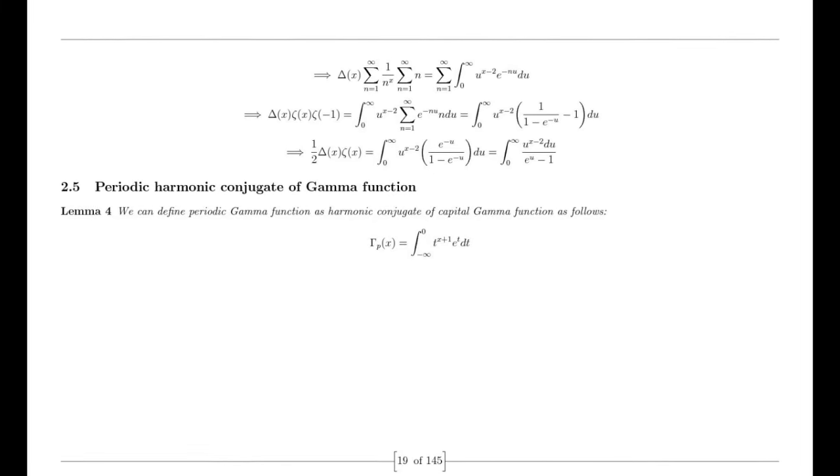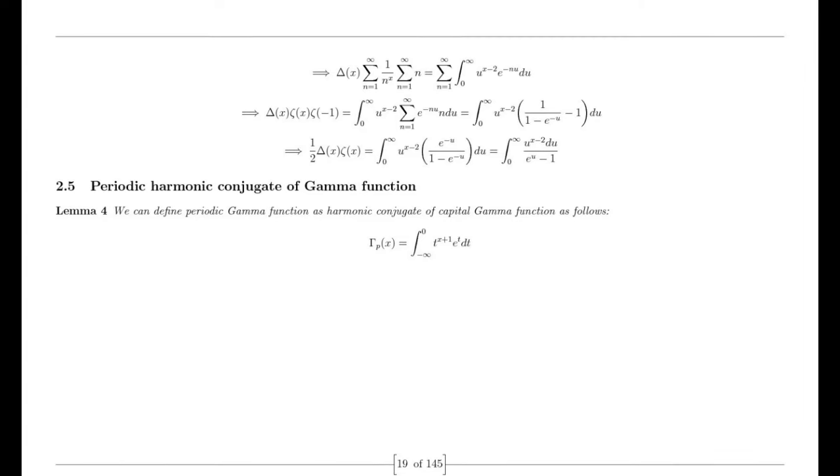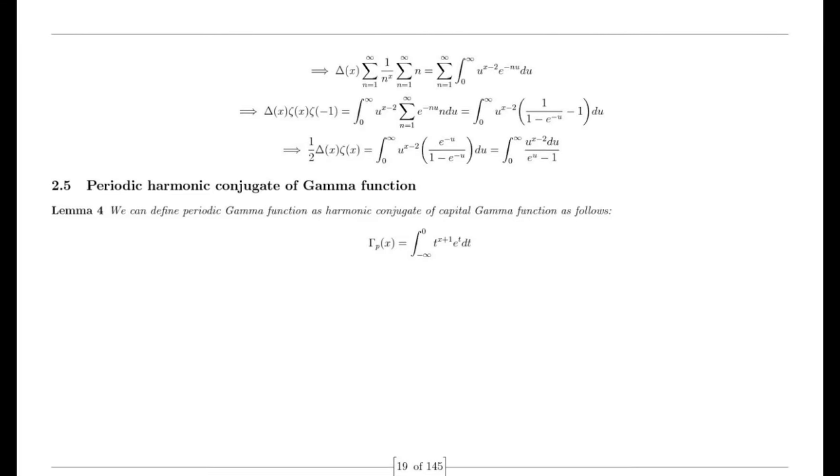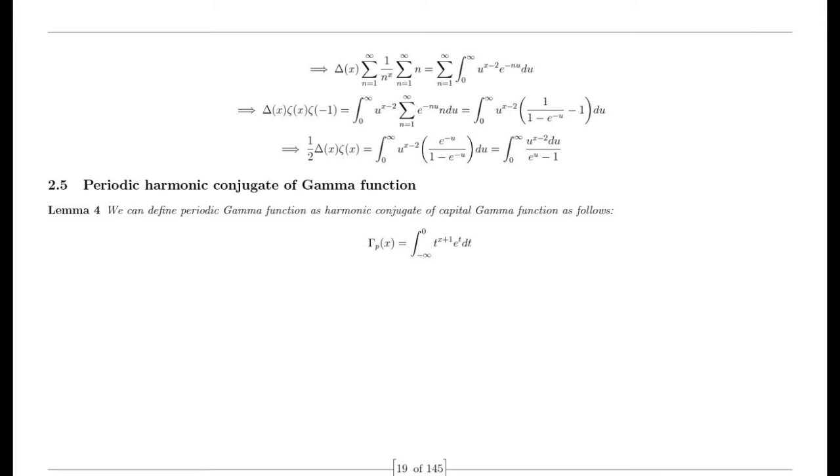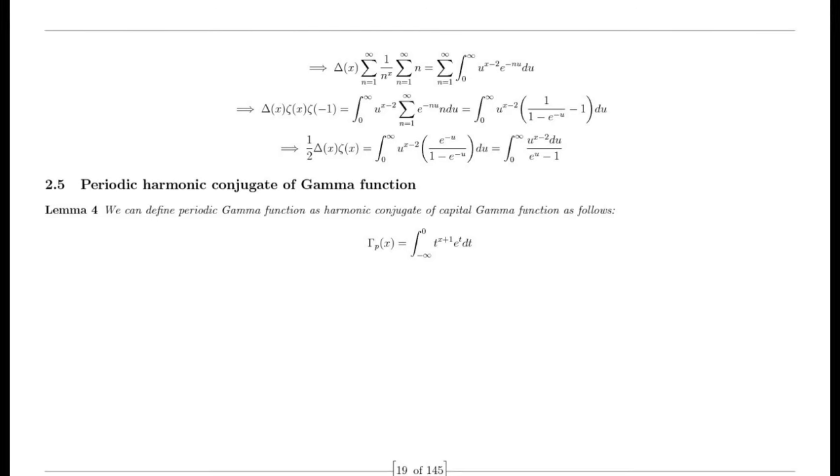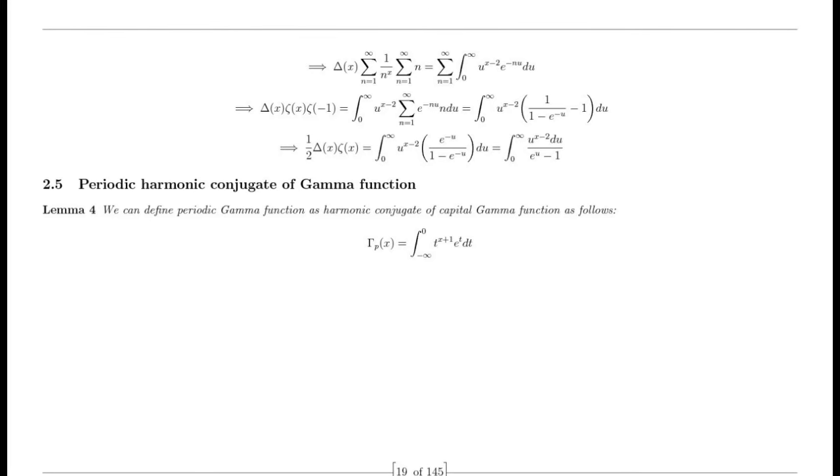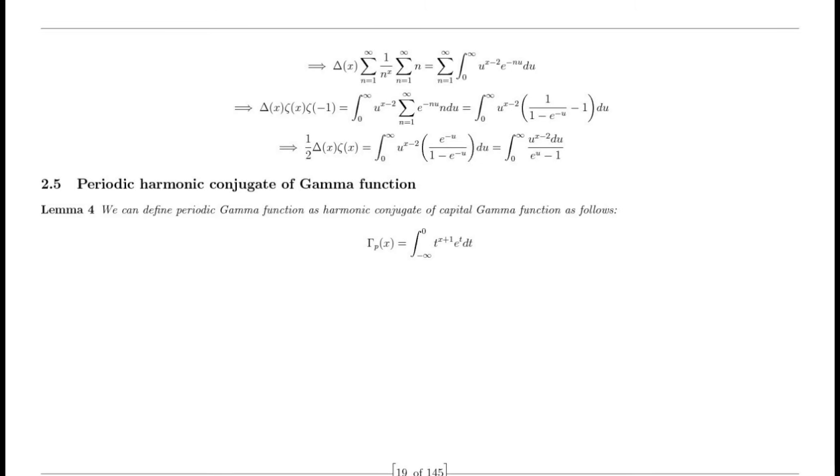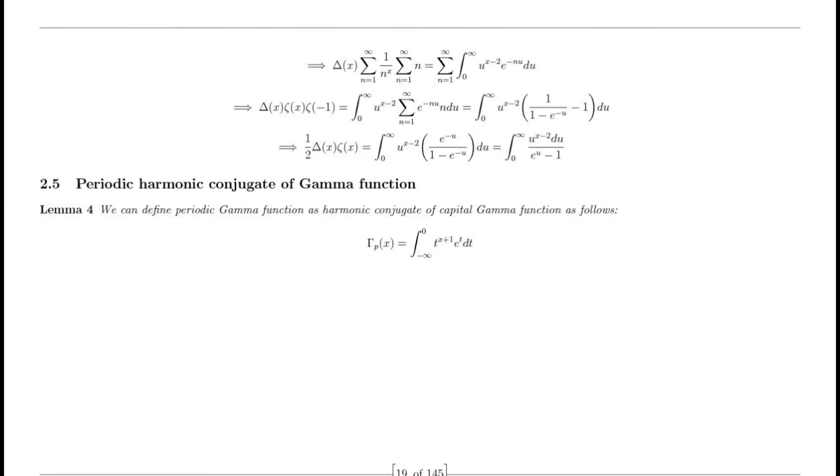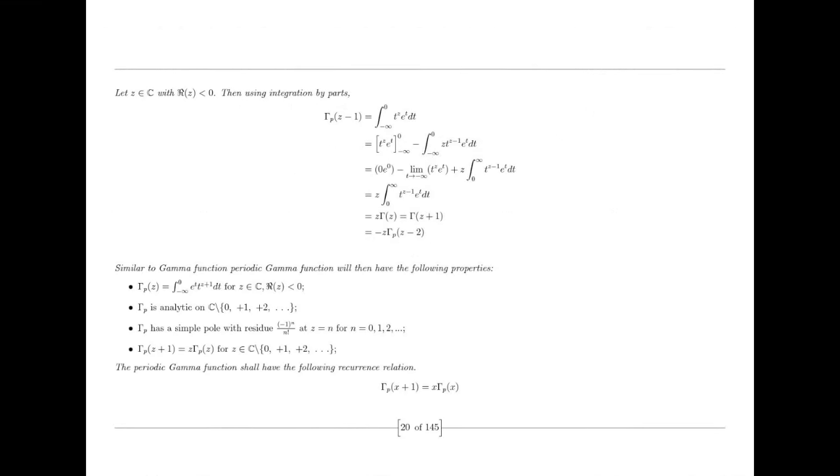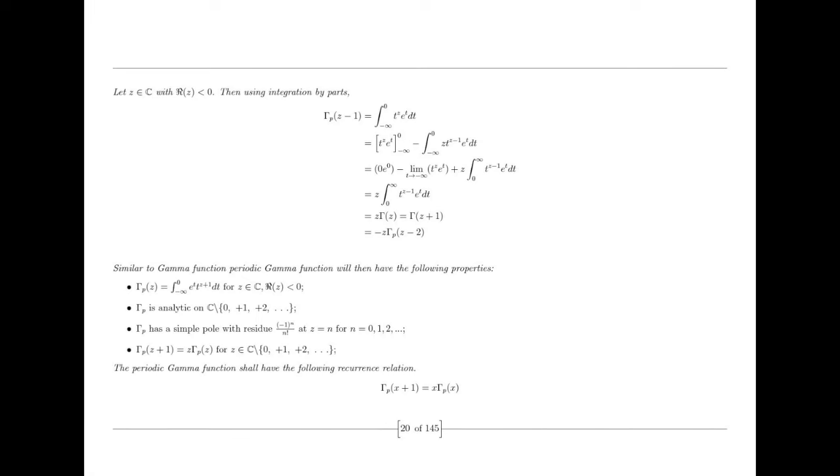I observed that the imaginary number i had ensnared both mathematicians and physicists in its imaginary realm, keeping them engrossed. My initial elementary proof called for a half-unit circle, contradicting the conventional notion of a unit circle. I had discovered a way to incorporate a dual-unit circle within the familiar concept of a unit circle, but further justification was needed.